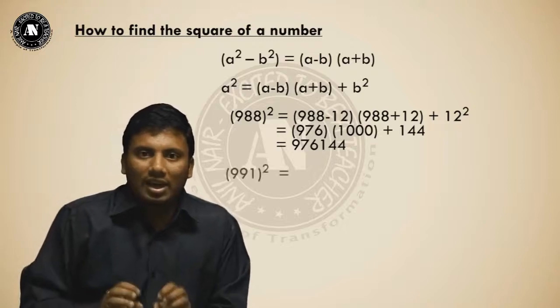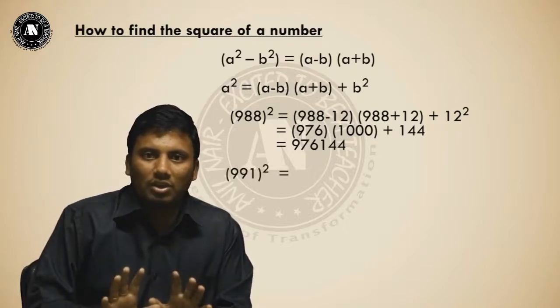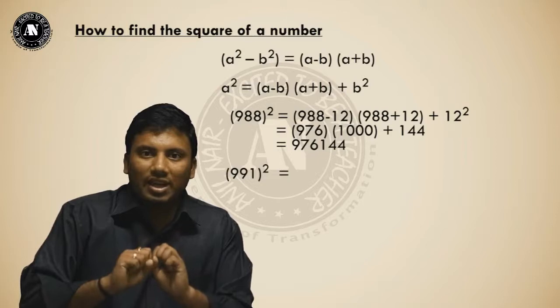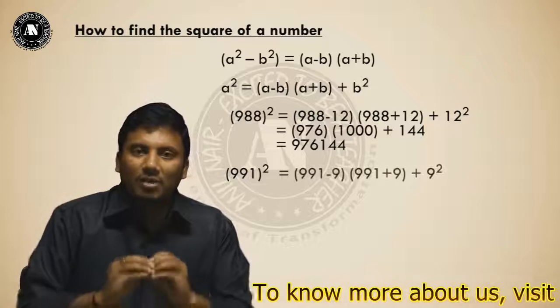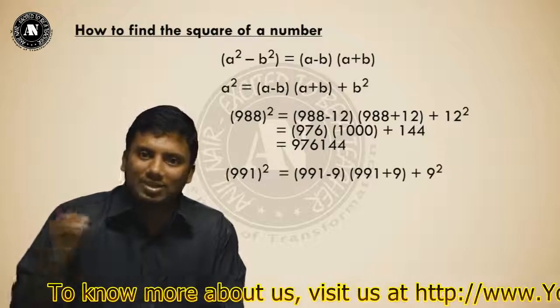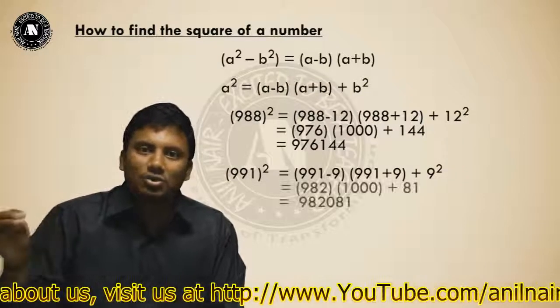One more example. 991 whole square. All the viewers, just watch the video and tell the answer. 991 whole square. 991 is nearer to 1000. (991-9)(991+9) + 9². 982,081.